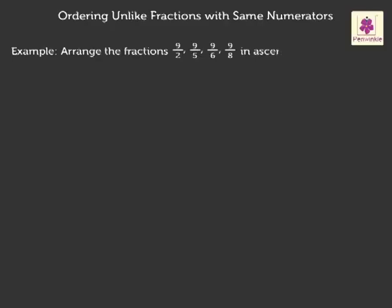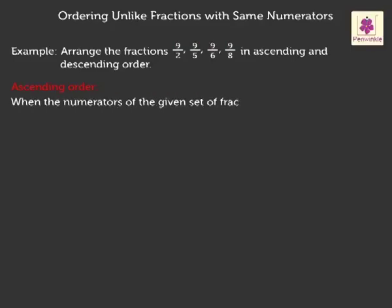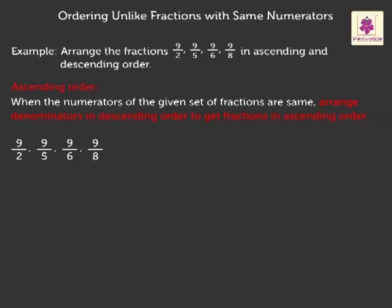Now let us learn to order unlike fractions with the same numerators. Look at the example: arrange the given fractions in ascending and descending order. For ascending order, when the numerators of the given set of fractions are the same, arrange the denominators in descending order. Thus we get ascending order as: 9 upon 8, 9 upon 6, 9 upon 5, and 9 upon 2.